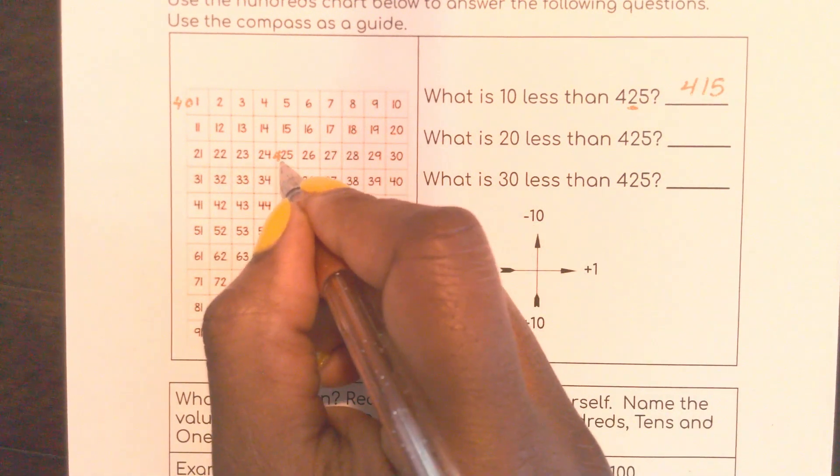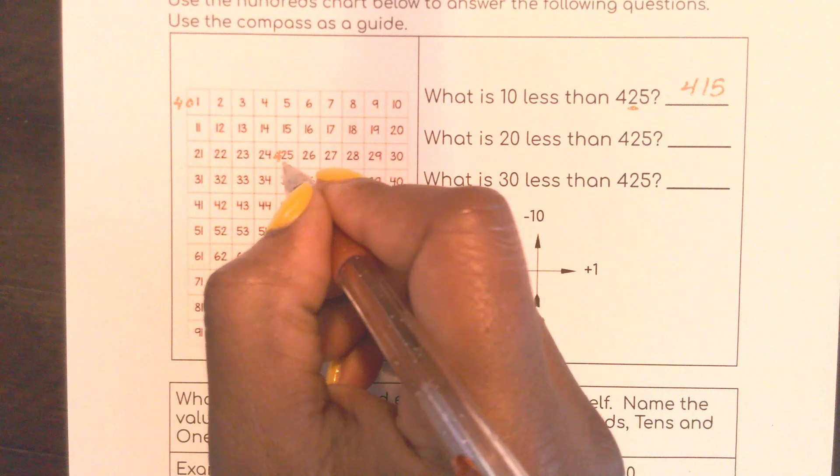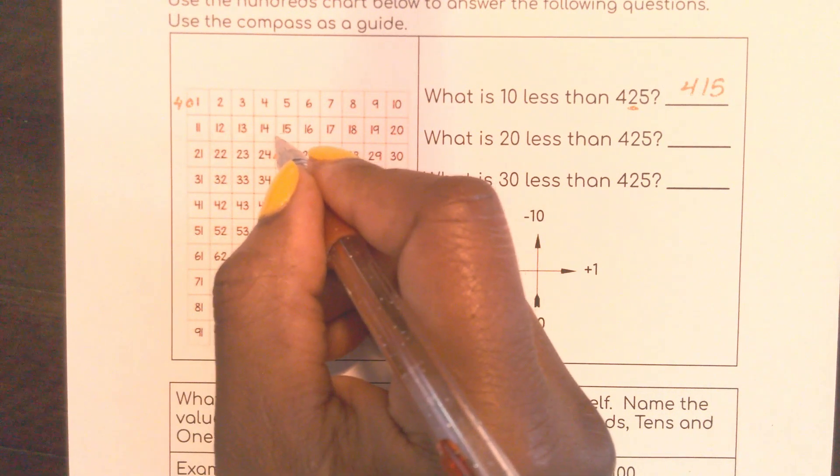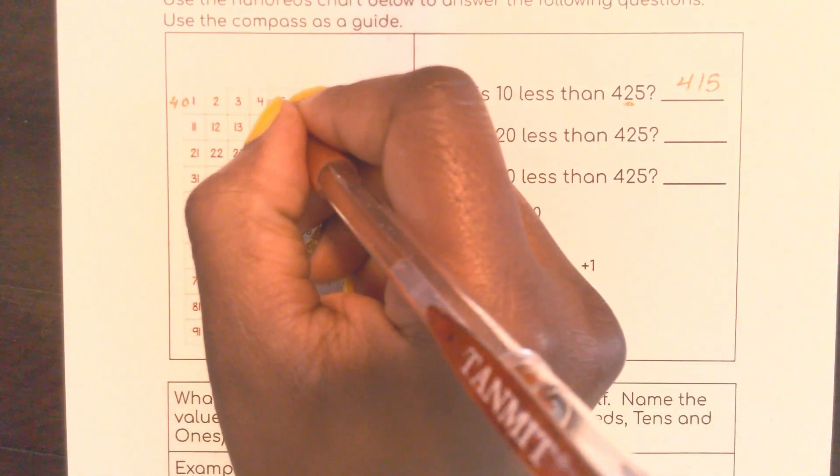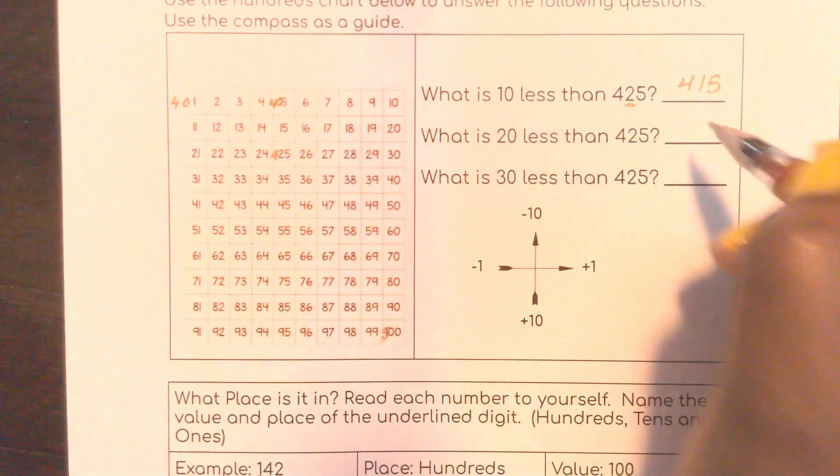So now I'm going to do 20 less than 425. So here I'm still on the board. 10, 20. So remember I said if I put that 400 in front, that would be 405.